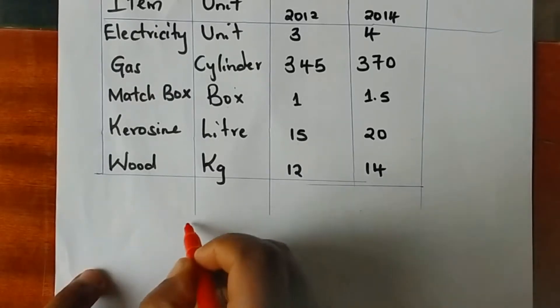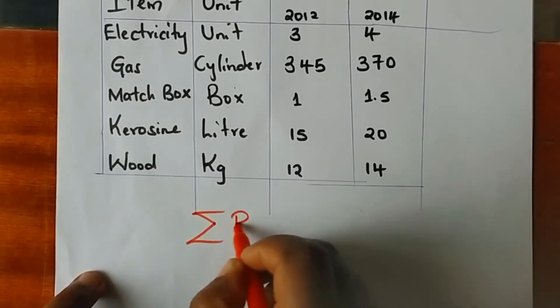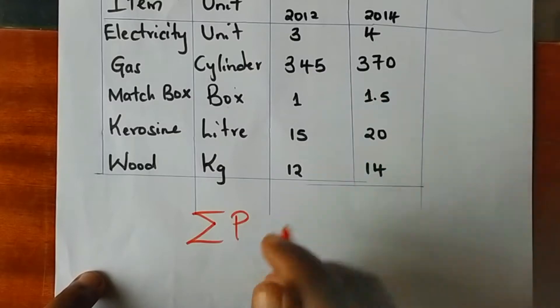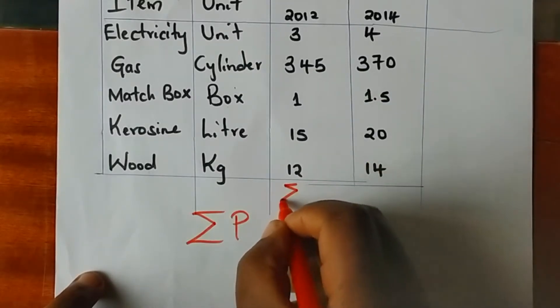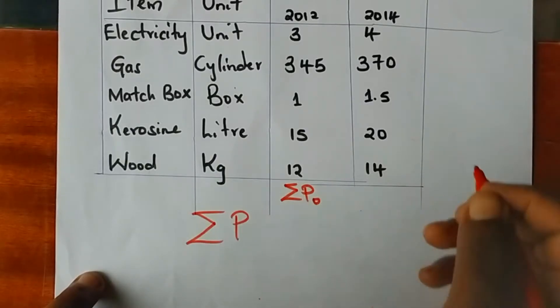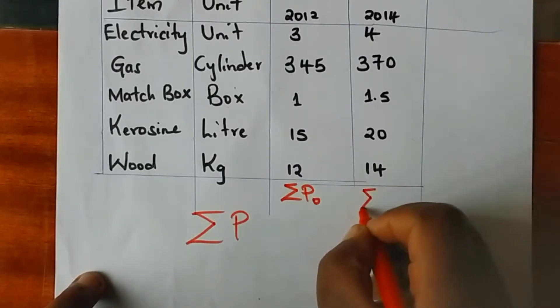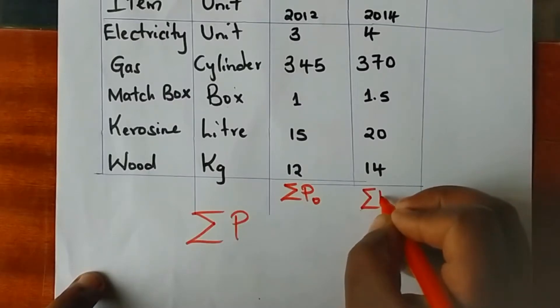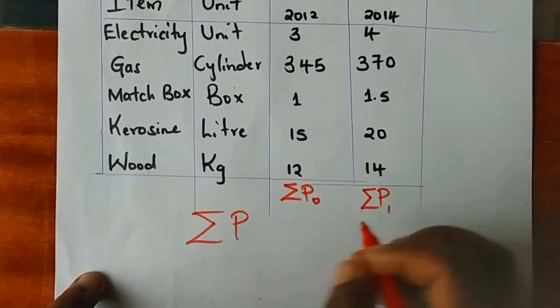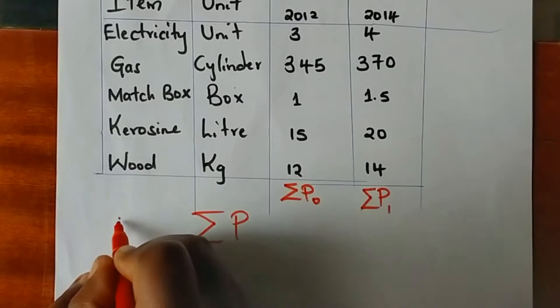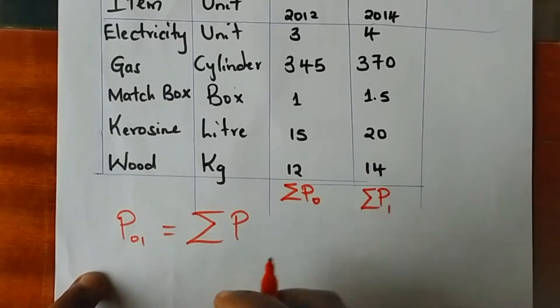And all the prices of the current year are aggregated. The price index, therefore, is obtained by the ratio of the summation of the prices of the current year divided by the summation of the prices of the base year, multiplied by 100.